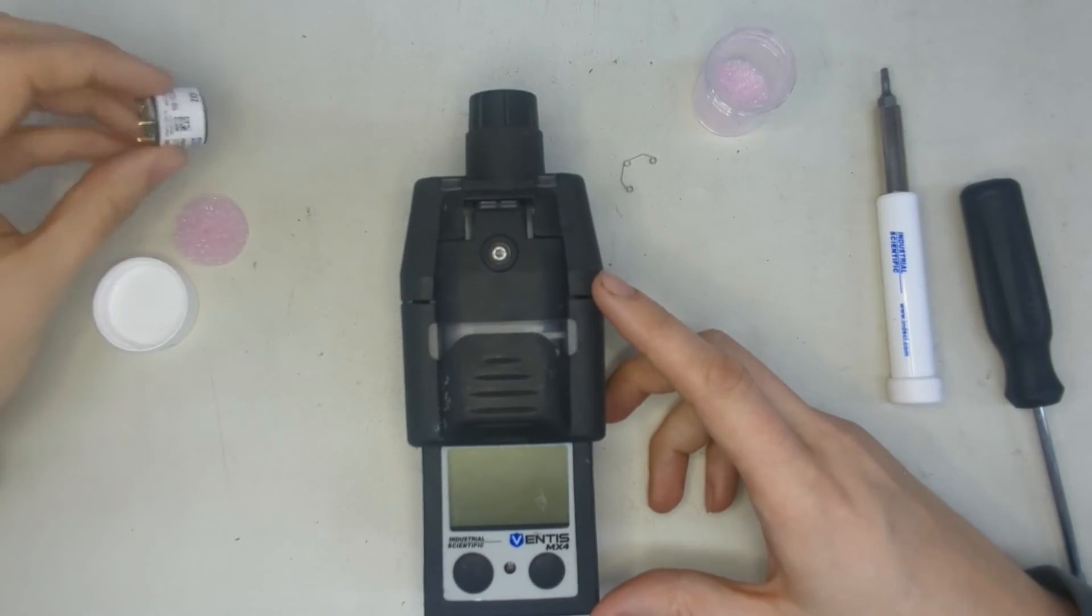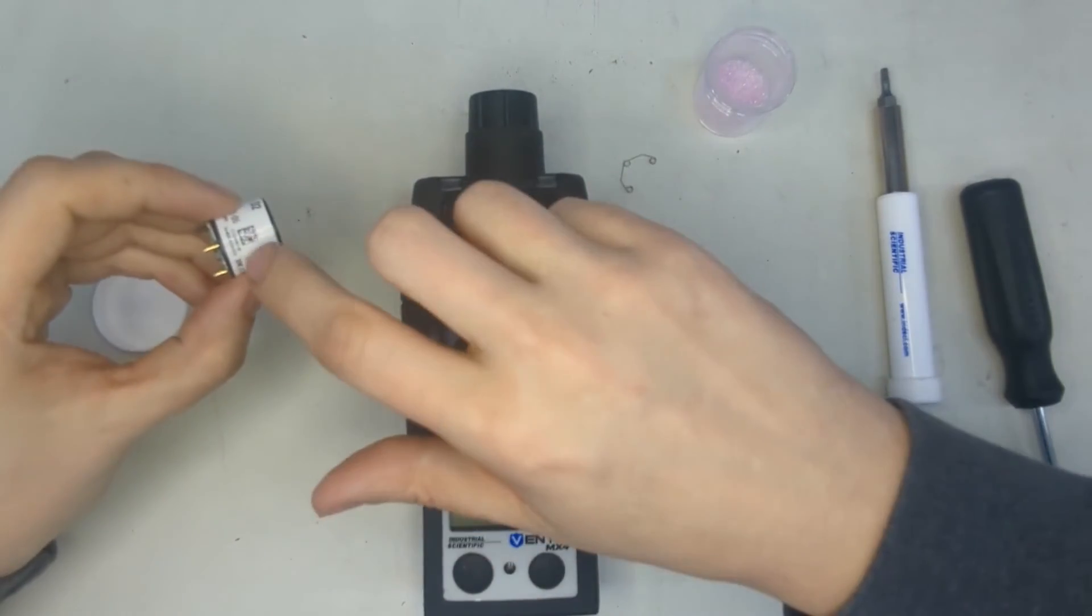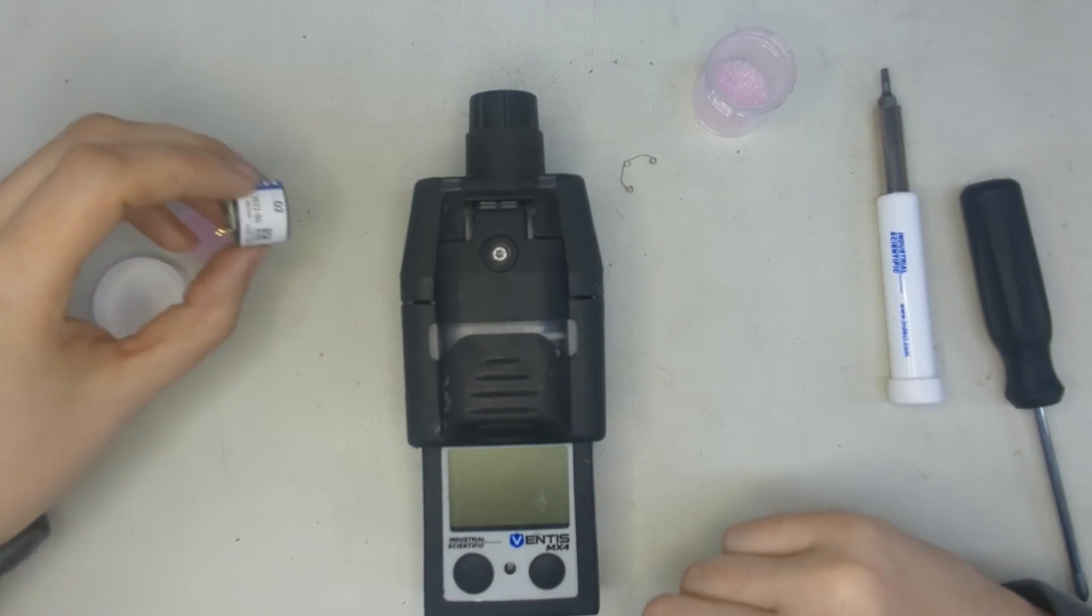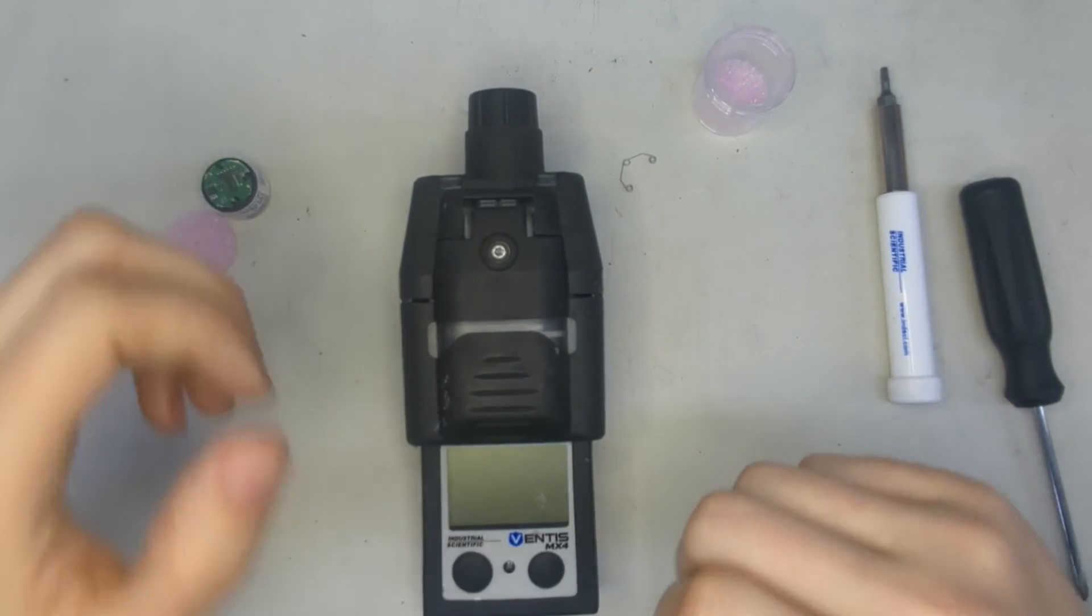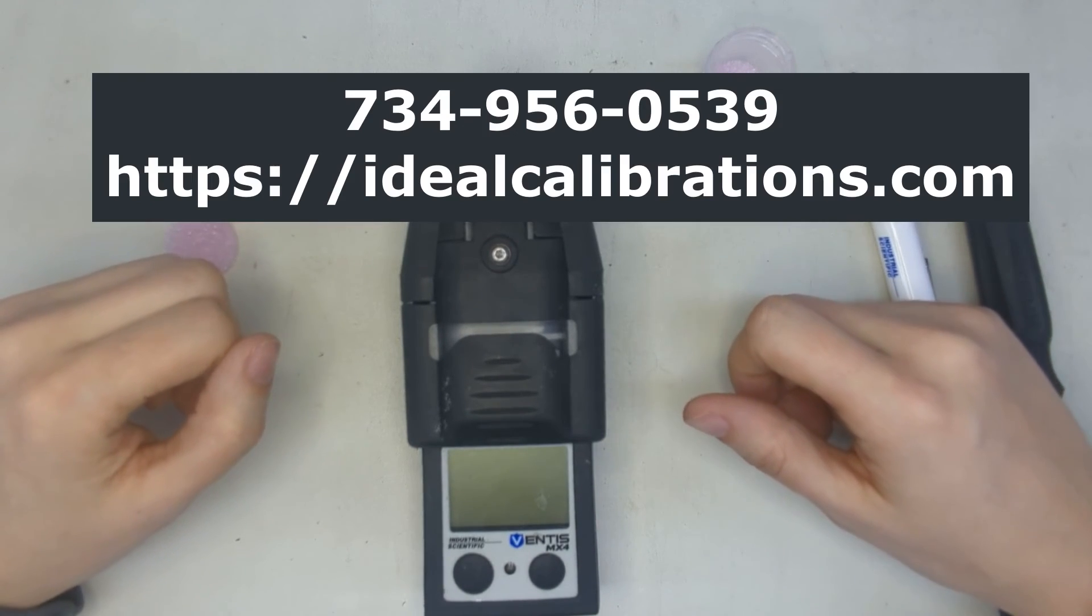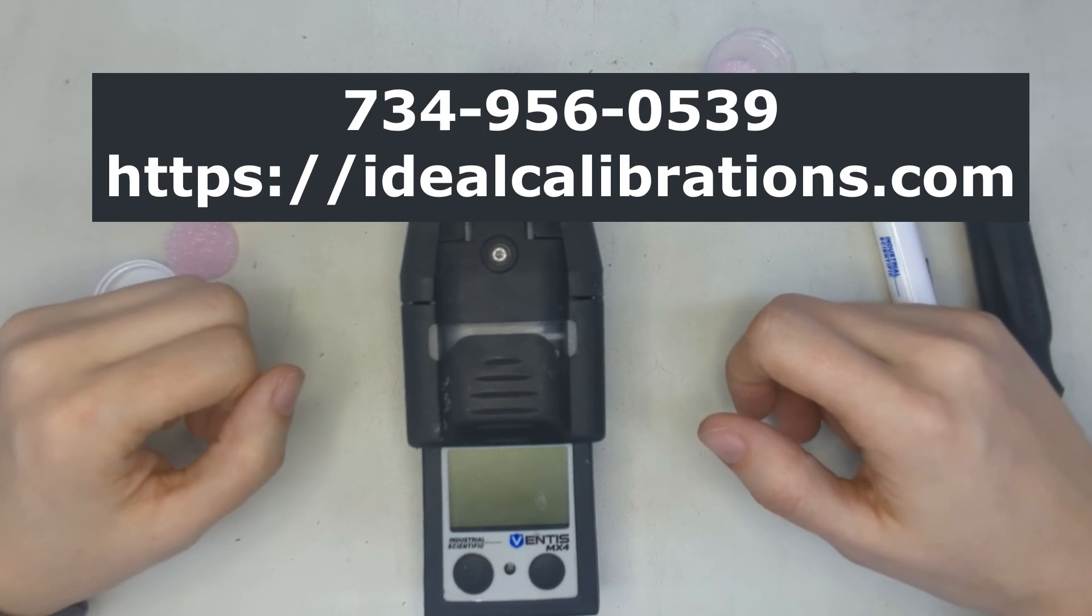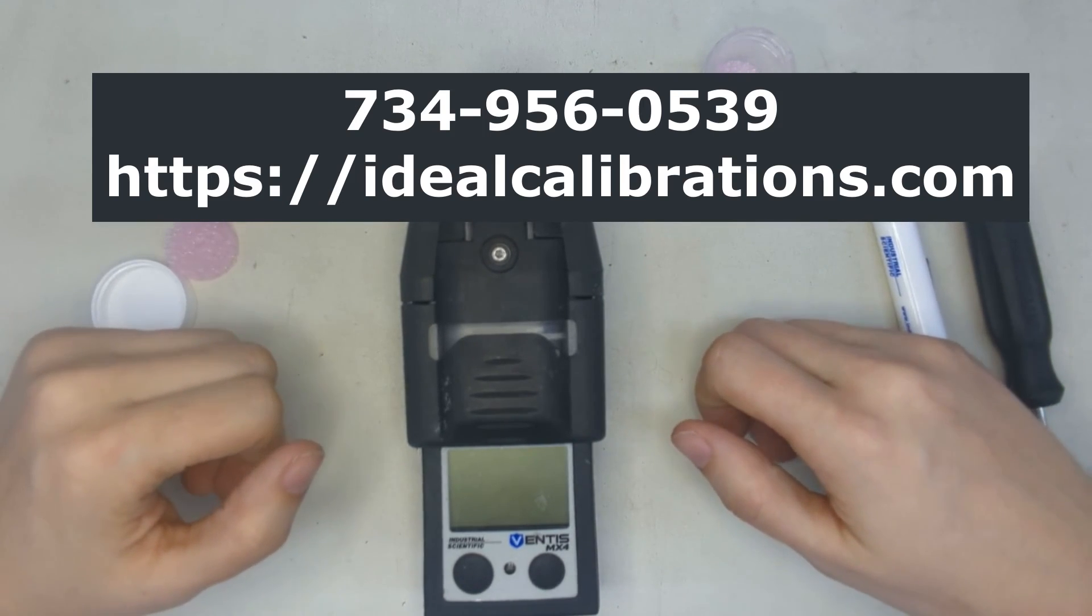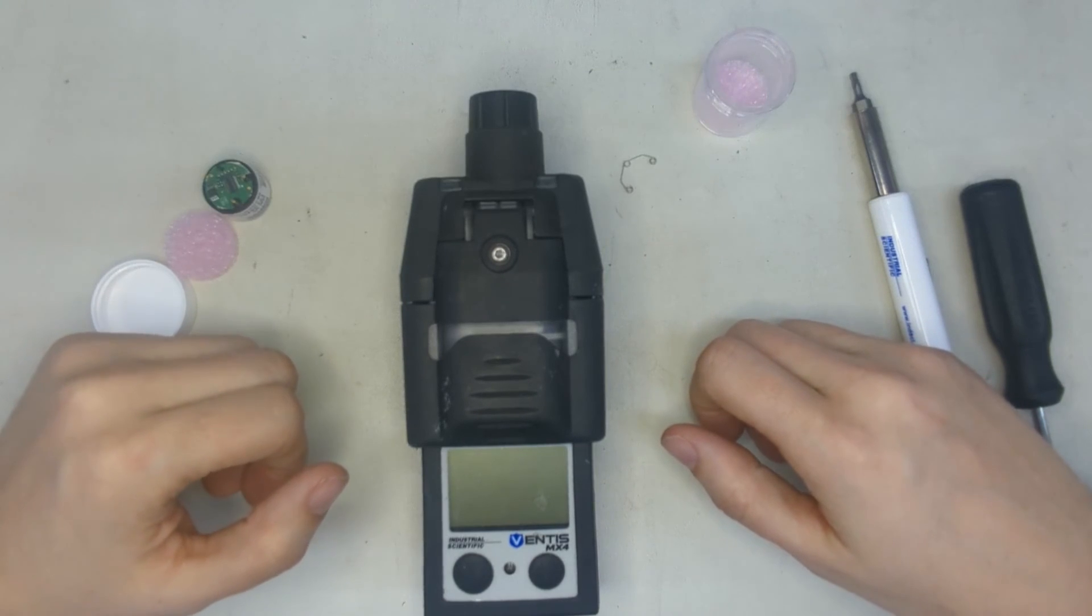Make sure you record your serial numbers. And make sure you check the warranty date of the sensor. Because if it died before the warranty was done, you might be due a free cell. If you have any questions, feel free to give us a call. The number here is 734-956-0539. Or you can find us on the web at idealcalibrations.com, where you can find calibration gas and any of the parts you might need to do the repairs. Thanks and stay safe out there.